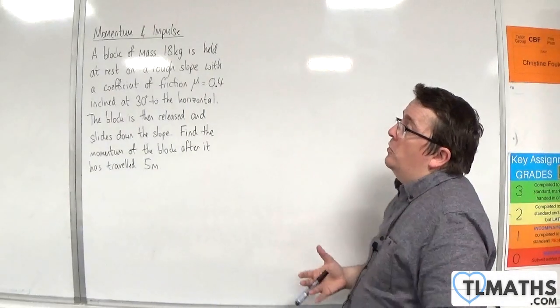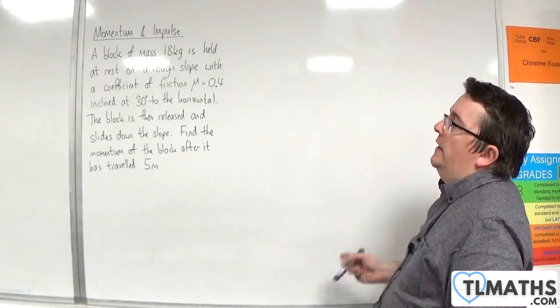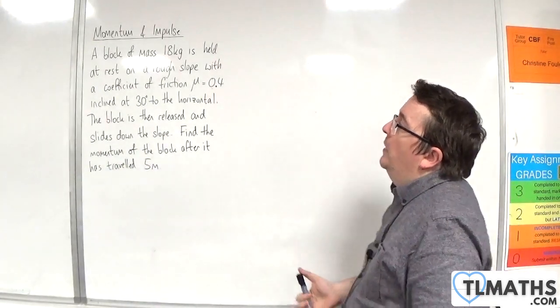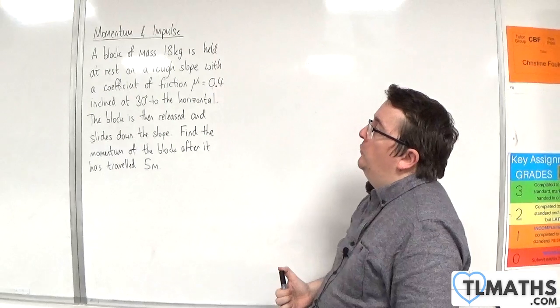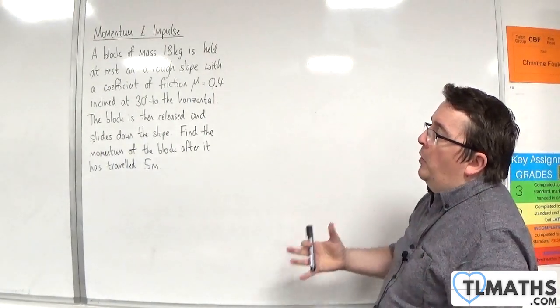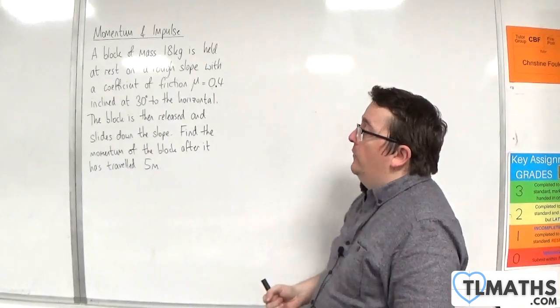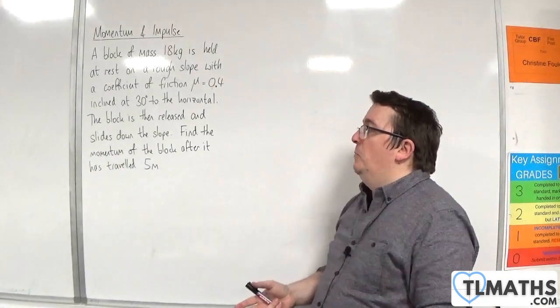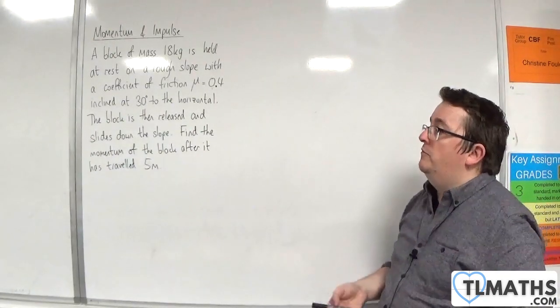In this video we have a block of mass 18 kilos held at rest on a rough slope with a coefficient of friction mu equals 0.4, inclined at 30 degrees to the horizontal. The block is then released and slides down the slope. Find the momentum of the block after it has travelled 5 metres.